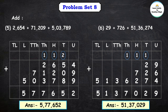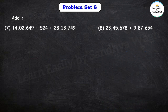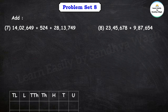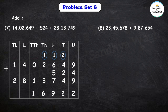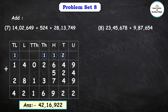Next: 14 lakh 2,649 plus 524 plus 28 lakh 13,749. 9 plus 4 plus 9 is 22. 4 plus 2 plus 4 plus carry 2 is 12. 6 plus 5 plus 7 plus carry 1 is 19. 2 plus 3 is 5, plus carry 1 is 6. 0 plus 1 is 1. 4 plus 8 is 12, write 2 carry 1. 1 plus 2 is 3, plus carry 1 is 4. So our final answer is 42 lakh 16,922.